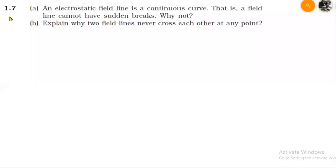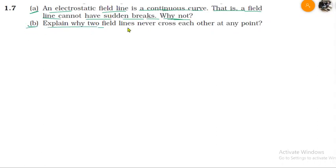The question is 1.7. An electrostatic field line is a continuous curve — that is, a field line cannot have sudden breaks. Why not? And part B is: explain why two field lines never cross each other at any point.